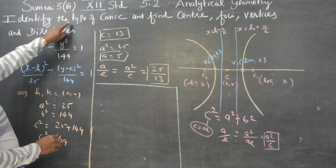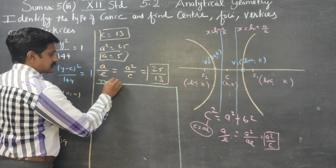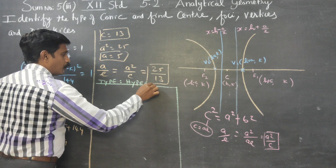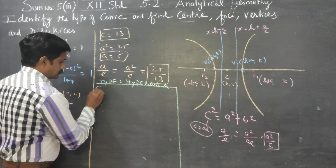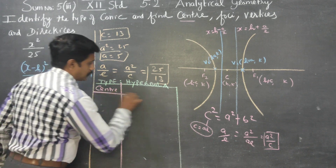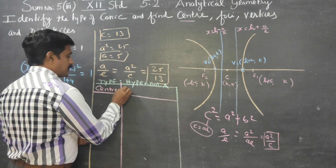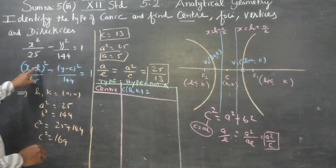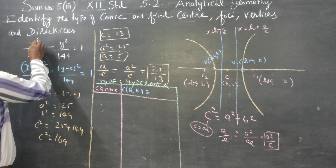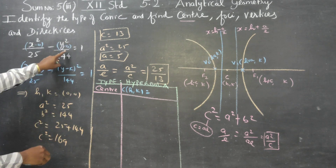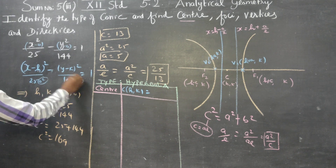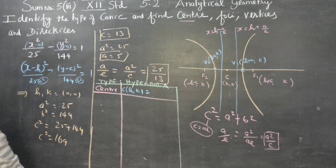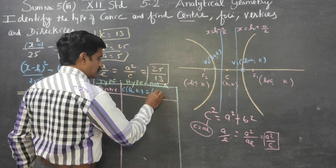The first question: type of conic — the type is hyperbola. The second question: centre. The centre formula is (h, k). My h is 0 and k is 0. Matching the standard formula, a² and b² are identified, and H and K are both 0. So the centre is (0, 0).